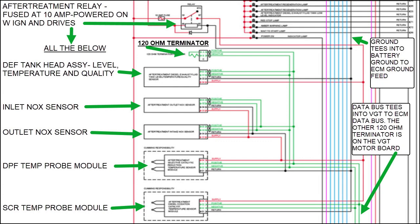If you don't follow that procedure, your DEF level calibration can be off. I've had people call me saying they put a new DEF float in and now when the tank is half full it says it's full — that's exactly what happens when they skip it. You have to drain the tank, run it for a couple minutes, shut it off, fill it, and go through that procedure again so it learns the correct level in the tank. Thanks for joining me on Engine Shop Joe — see you soon.